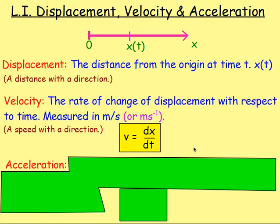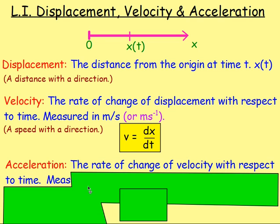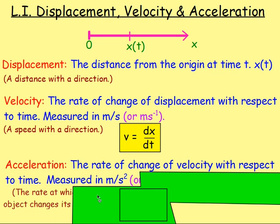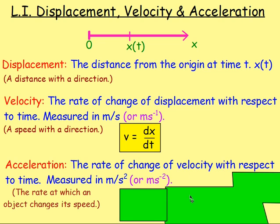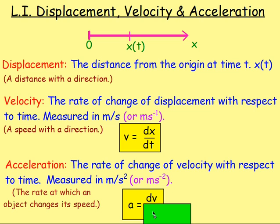Acceleration is very similar. Again, think rate of change — it's how quickly you're changing your velocity. So the acceleration is the rate of change of velocity with respect to time. That will be measured in metres per second per second, or m/s squared, or ms to the minus 2. It's the rate at which an object changes its speed. Because you're thinking of rate of change, you can think differentiation. So the acceleration equals dv/dt.